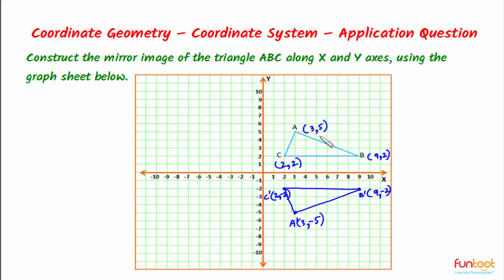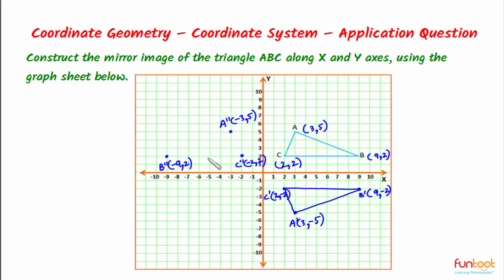Now let's find the mirror image of the triangle along the Y axis. For finding the image along the Y axis, the Y coordinate remains the same and the X coordinate becomes negative. So the mirror image of point C is C'' (-2, 2), mirror image of point B is B'' (-9, 2), and mirror image of point A is A'' (-3, 5). We join the points with a straight line, and A''B''C'' is the mirror image along the Y axis.